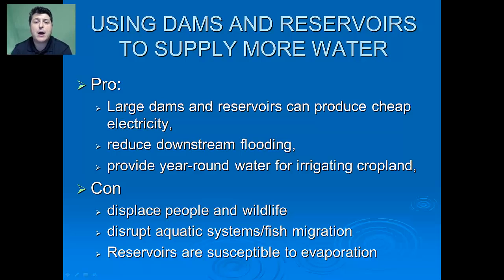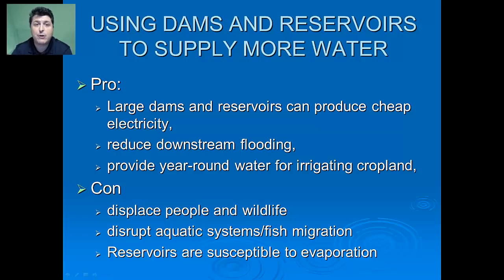If withdrawing groundwater isn't going to be our main solution, what about building dams to produce reservoirs? There are certainly some positives: if you build a large enough dam, you can produce electricity through a hydroelectric plant. A dam also controls the flow of water from upstream, so there'll be less flooding downstream, and you'll have year-round water for irrigation.